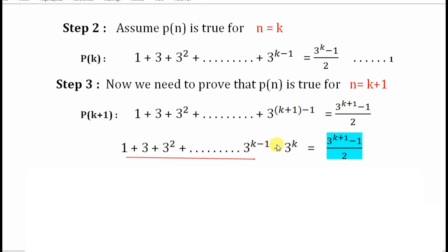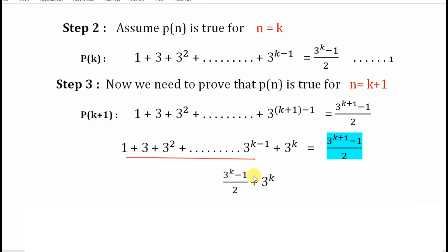We need to solve the left hand side and prove that it equals 3 raised to k plus 1 minus 1, whole divided by 2. The terms from 1 up to 3 raised to k minus 1 equal 3 raised to k minus 1 divided by 2 — by our inductive hypothesis from equation (1). So I write 3 raised to k minus 1, whole divided by 2, and then add the remaining term 3 raised to k.